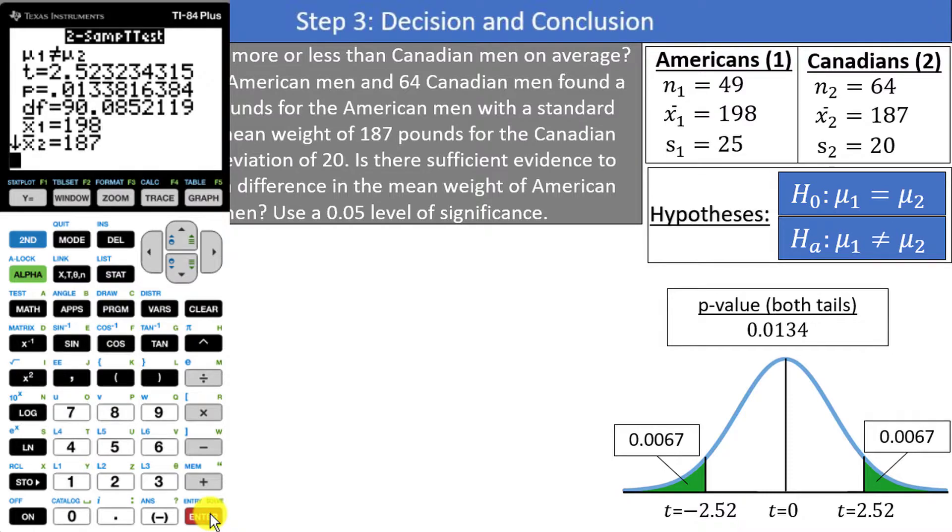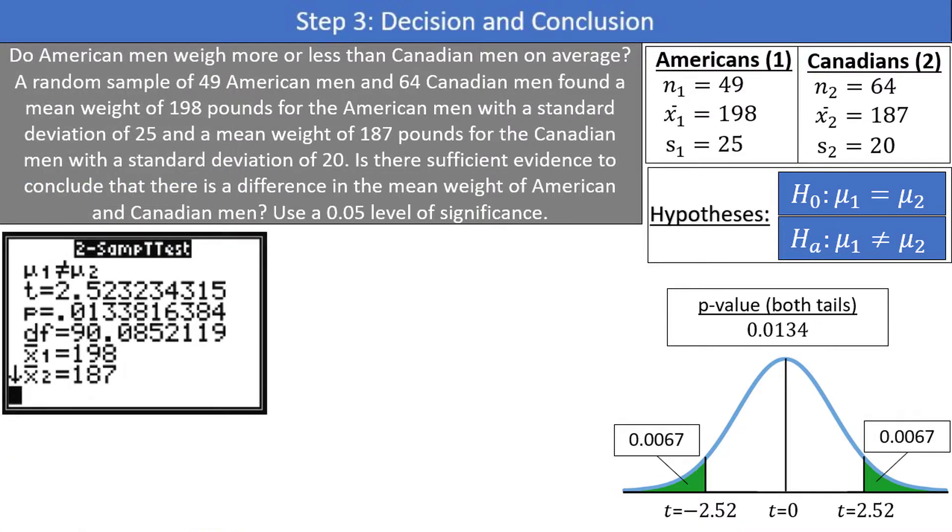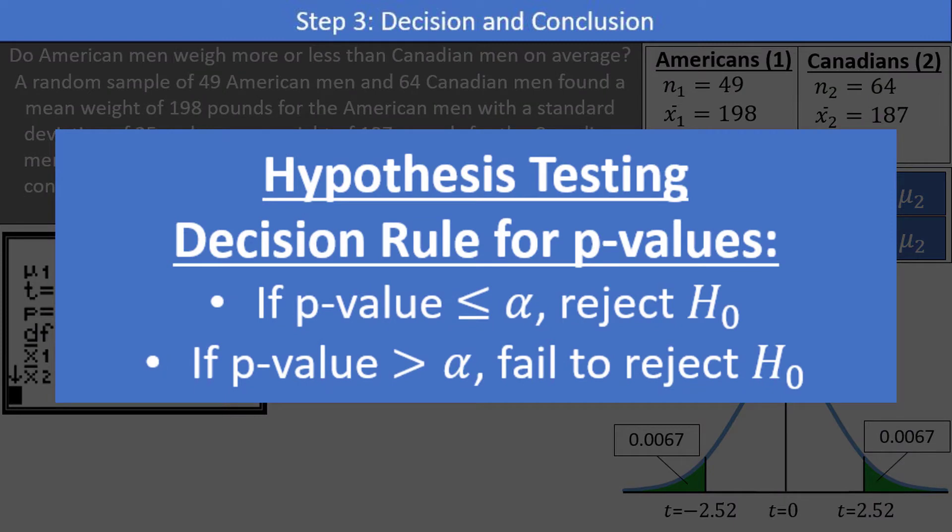Step 3. Decision and Conclusion. If the p-value is less than or equal to the level of significance alpha, then we reject the null hypothesis. And if the p-value is greater than the level of significance, we will fail to reject the null hypothesis. Like I always like to say, if the p-value is low, the null has to go, and if the p-value is high, the null will fly.